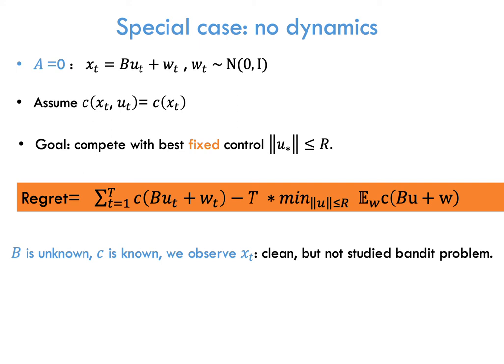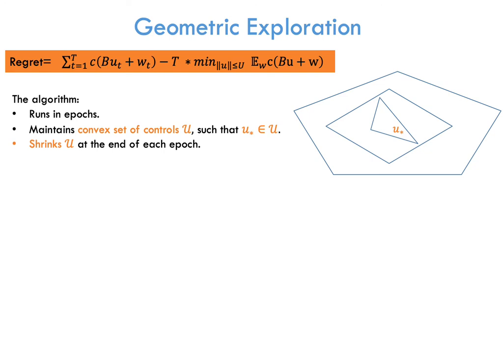The regret is our total cost minus t times the expected cost of the best control. So, the matrix B is unknown, the convex cost is known, and we get information about B by observing x_t. Observe that this special case is a clean bandit problem, which to the best of our knowledge, was not studied previously.